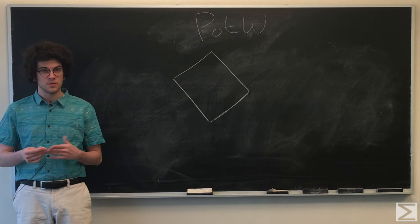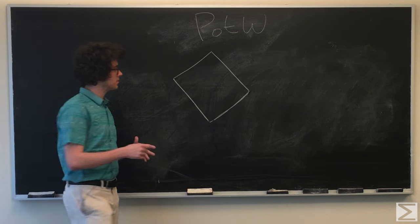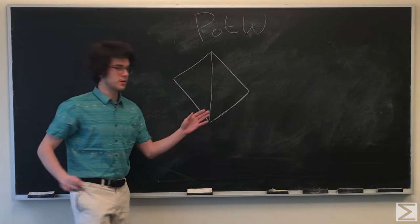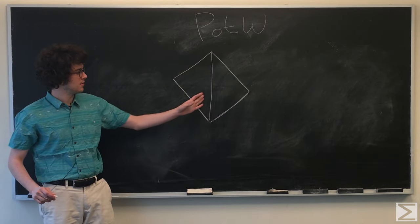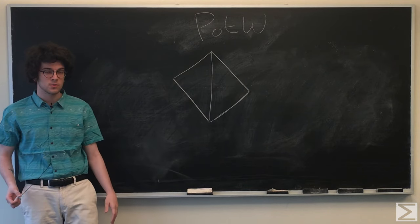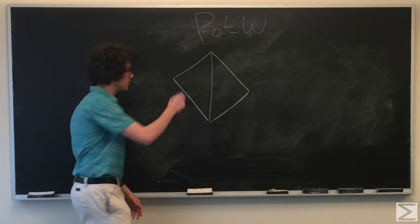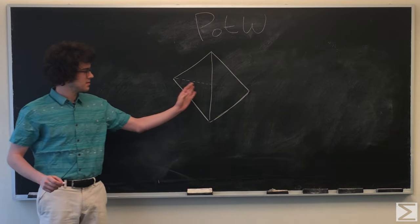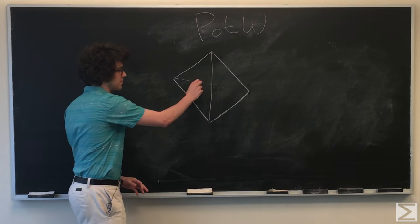But basically, all the geometry boils down to is that we're going to be looking at halves of squares, which are triangles, isosceles triangles, and distances from the center from certain points.